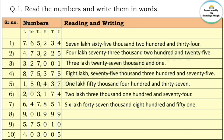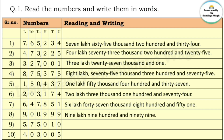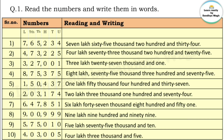Next number: the ten-thousands place and thousands place have zeros, so these places are not read. So the number is 9,999 — nine thousand nine hundred and ninety nine. Next number: 5,75,010 — five lakh seventy five thousand and ten. Next: 4,003,005 — forty lakh three thousand and five.